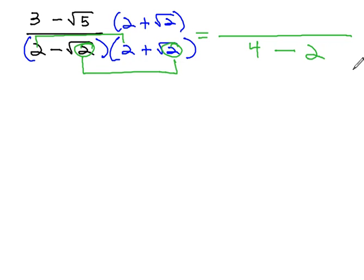In the numerator though, we need to be a little more careful, because we're not multiplying by just the 5 or just the 3. We're multiplying by the entire thing. This means we're going to have to foil out that numerator.